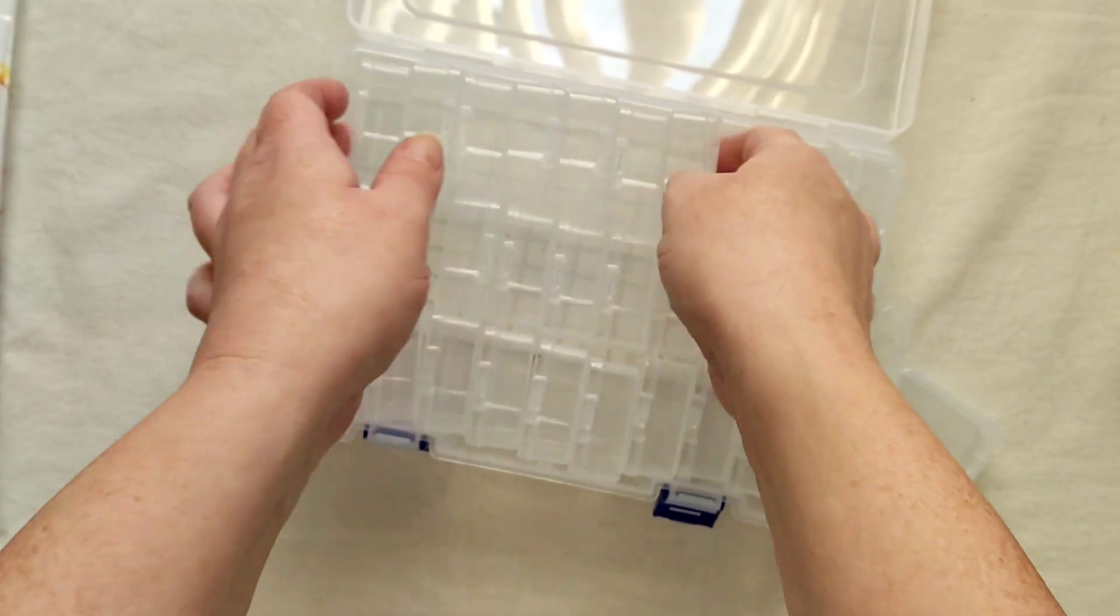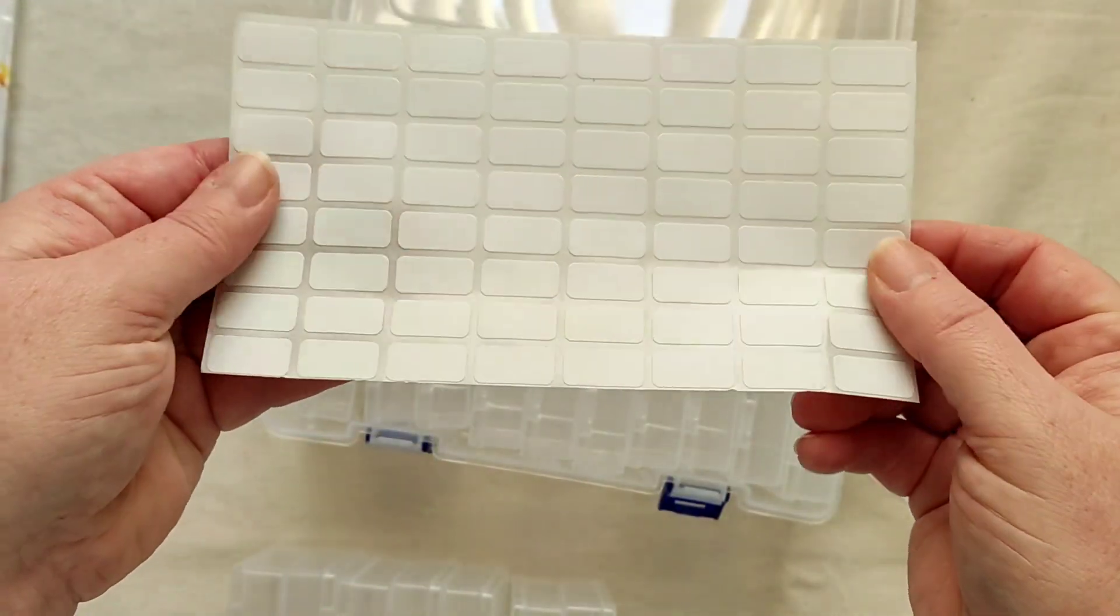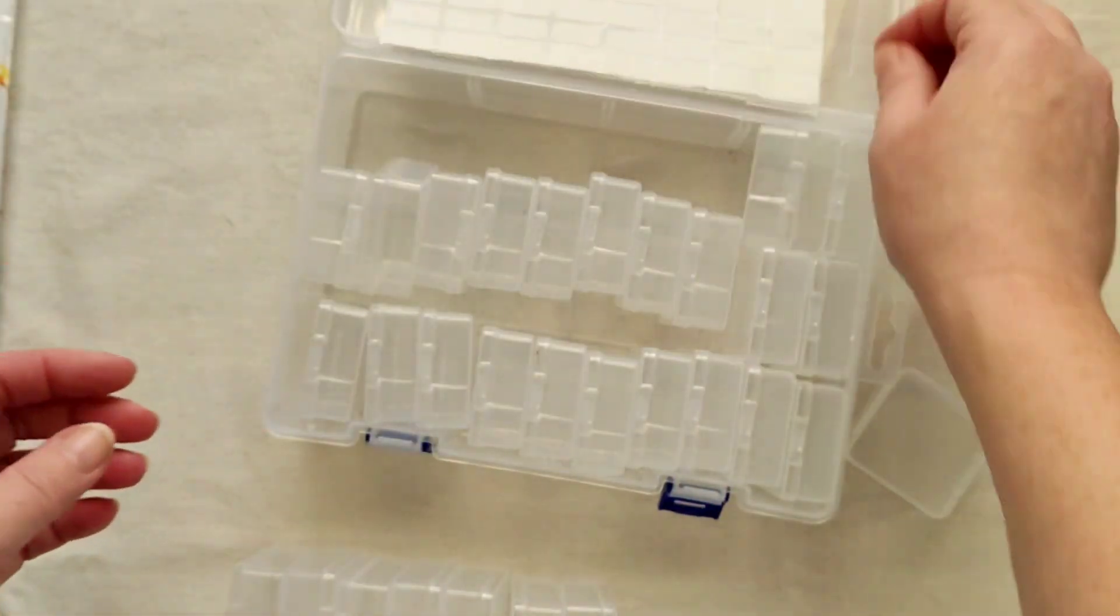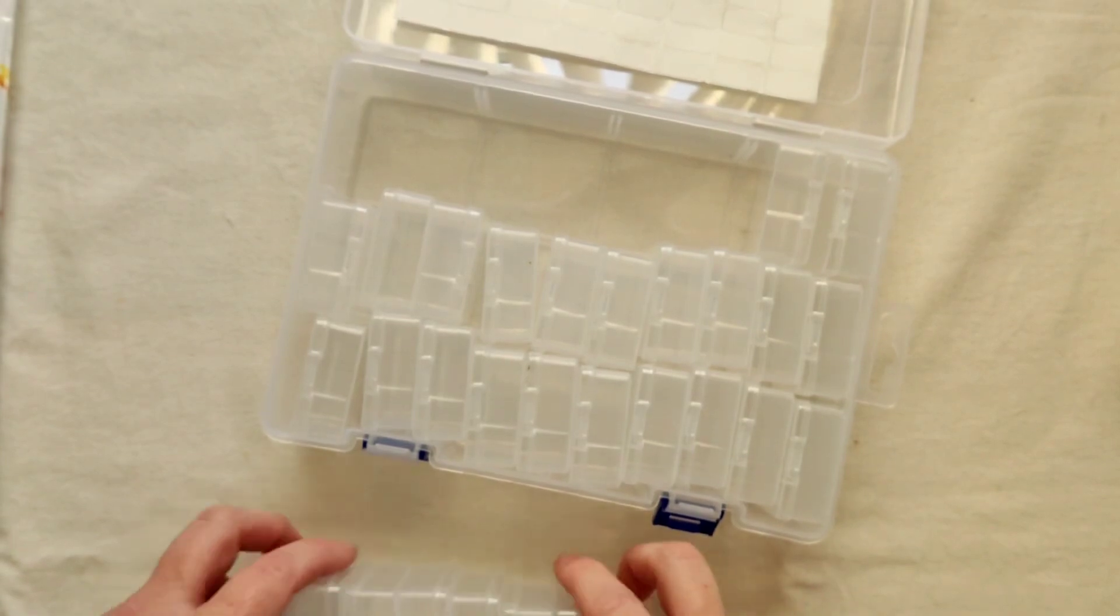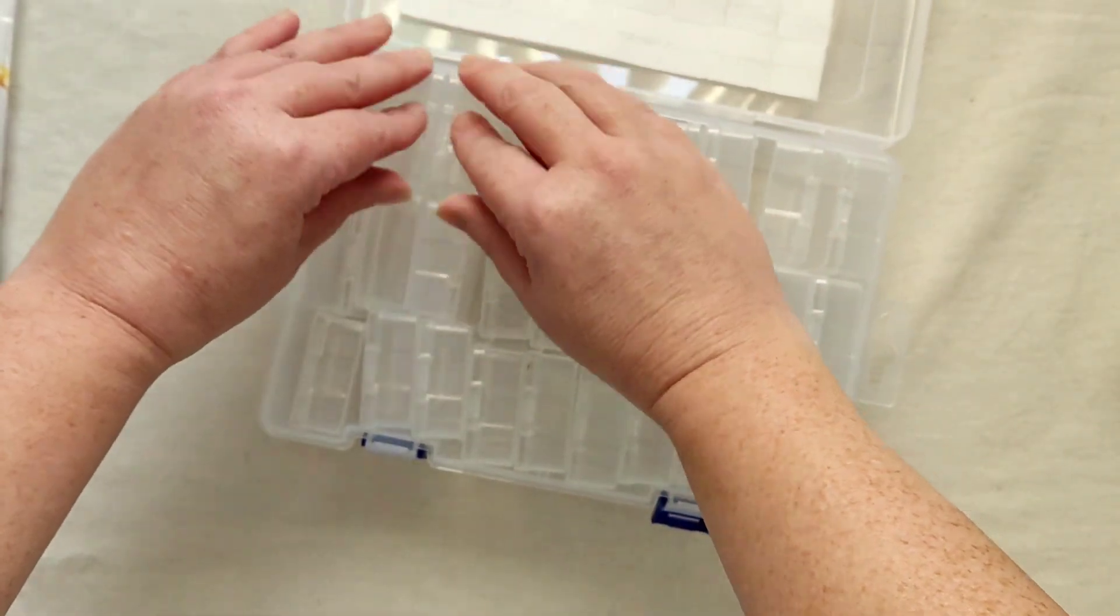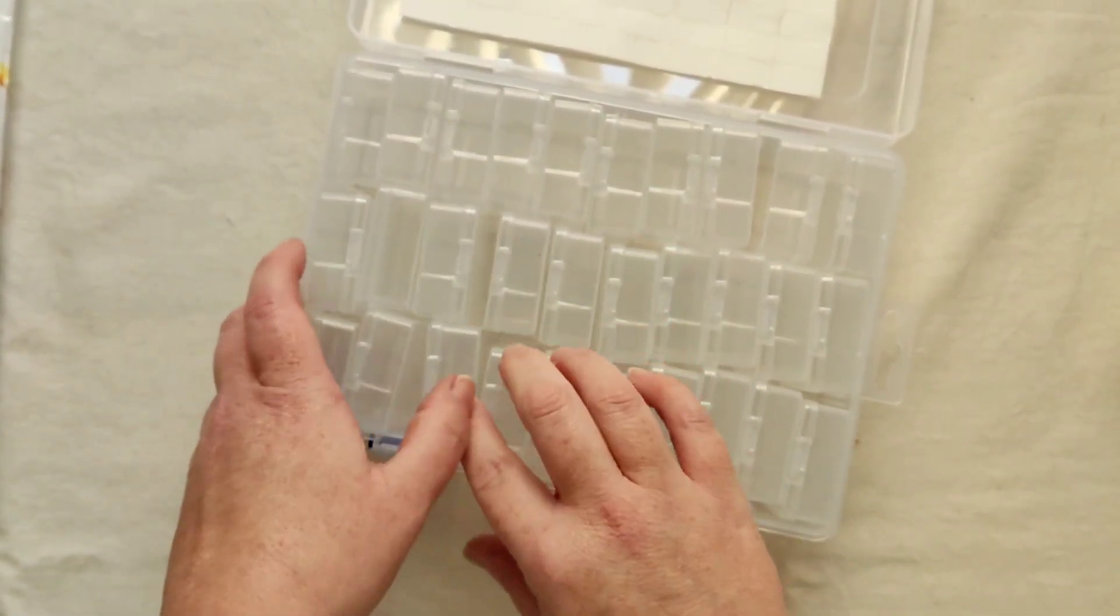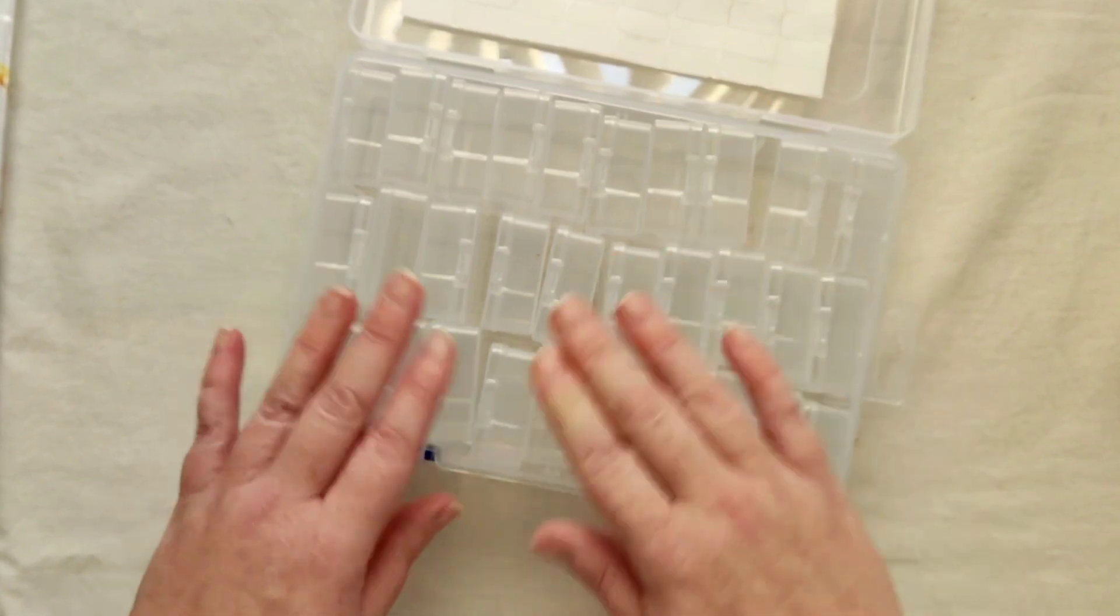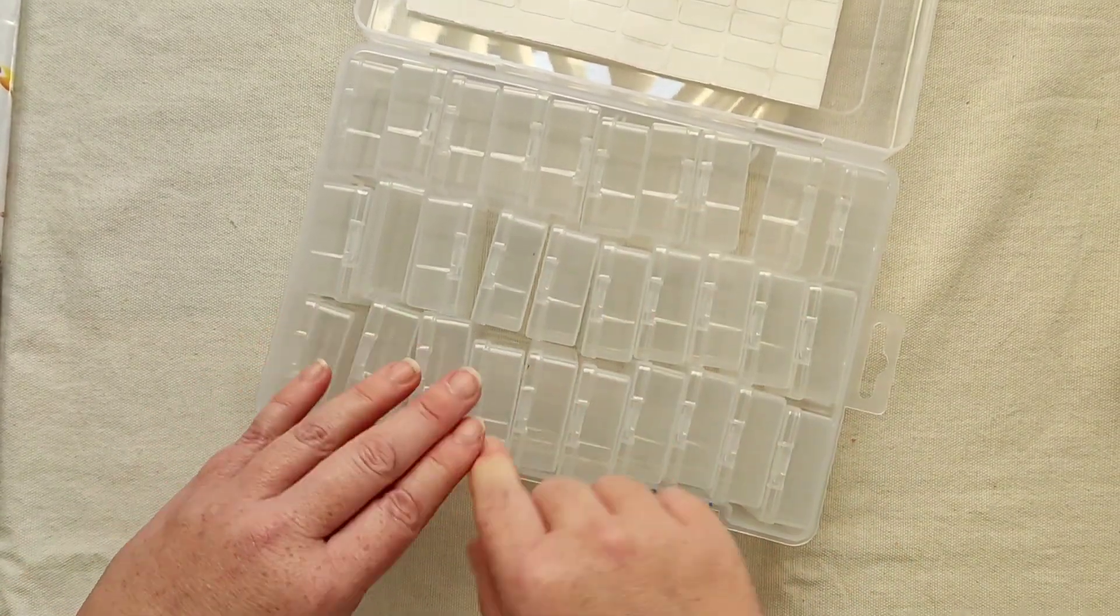It even comes with stickers for you to stick on your tubs with your DMC numbers on them. Or the numbers of your drills if they're not DMC. And they're not thin plastic either. They feel quite, and they fit in there really snug. They feel good quality. Oh, that's because there's a ridge on the bottom.